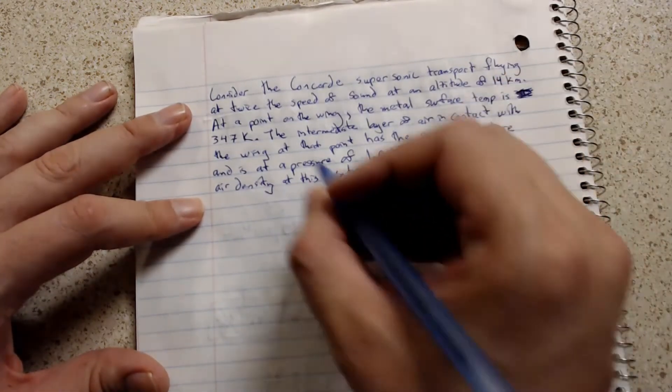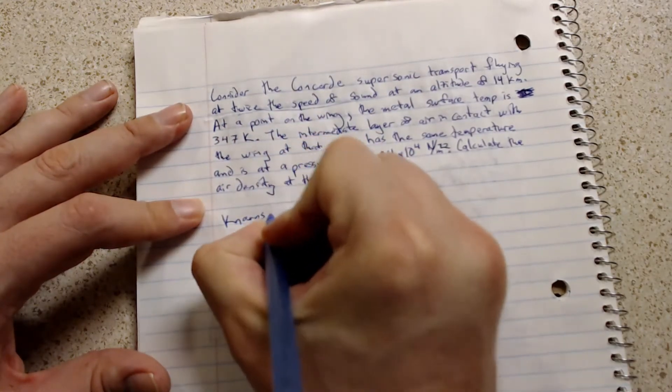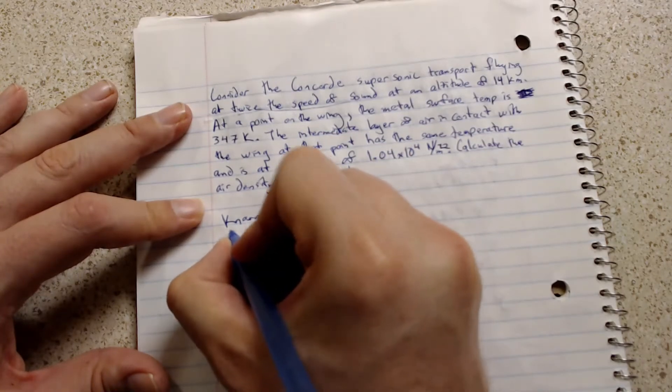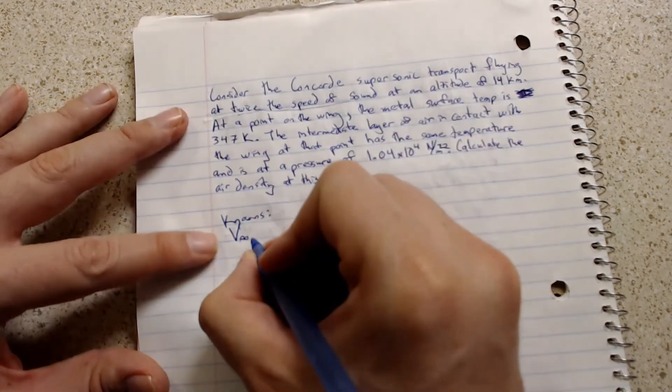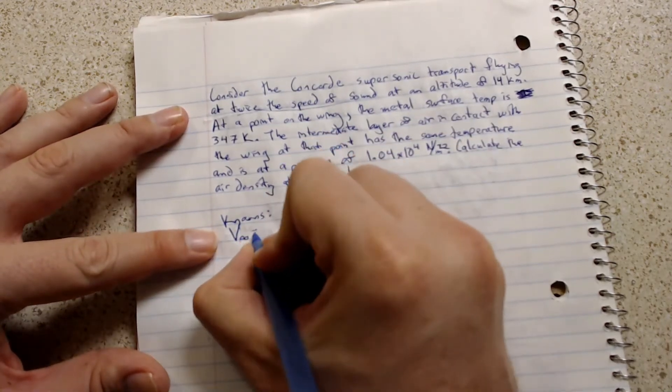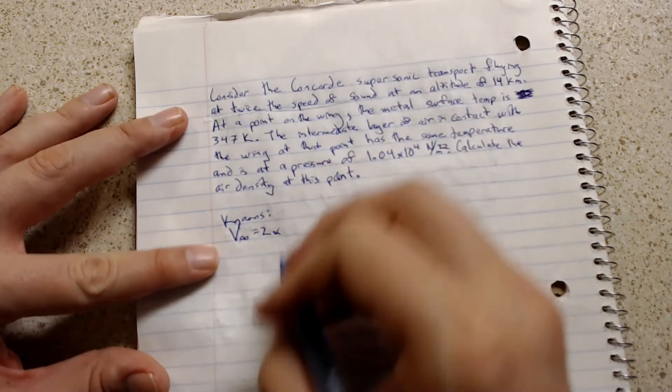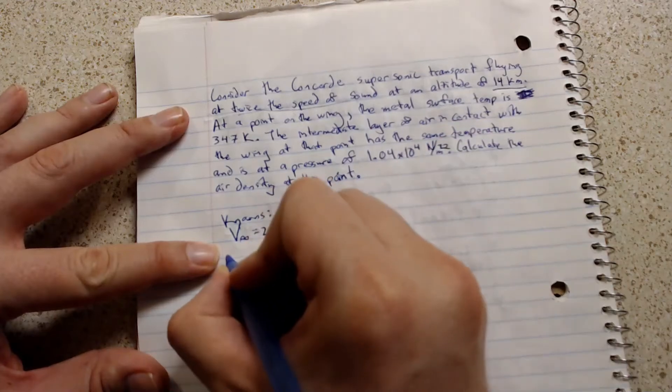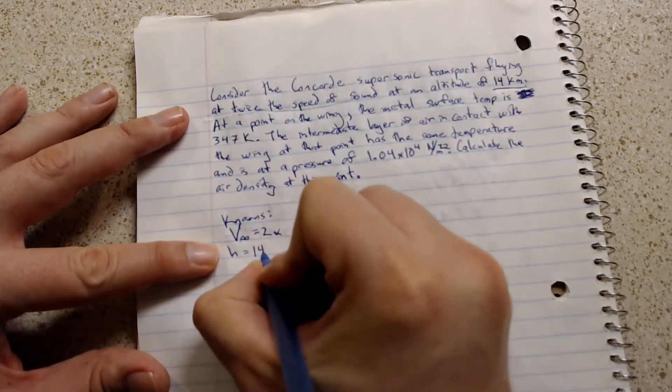So the first known, twice the speed of sound. Oh, let me write knowns. So the velocity of the free stream is equal to 2 times the speed of sound. The altitude is equal to 14 kilometers.